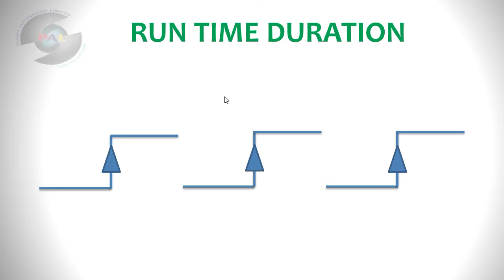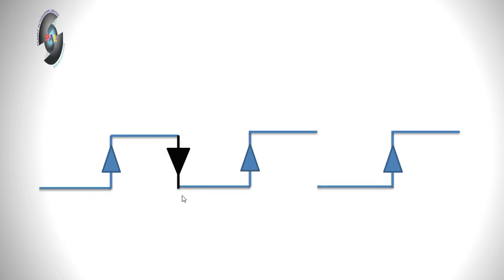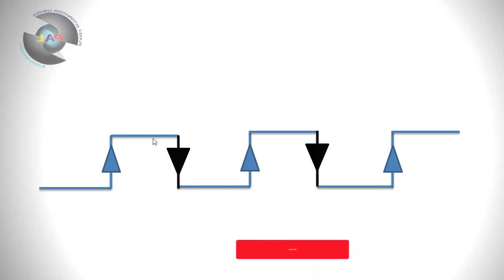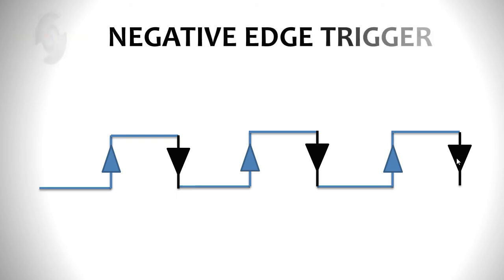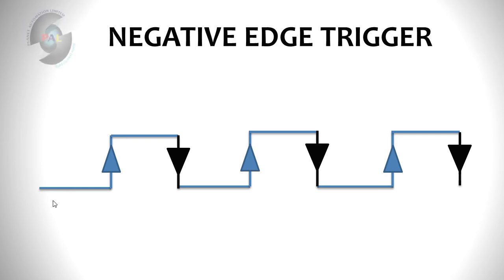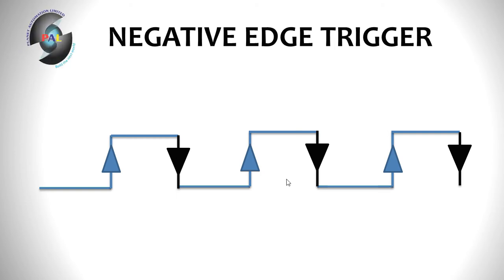For the negative edge trigger: when the signal goes from maximum to minimum — from high to low — that transition is called the negative edge triggering system, also called the falling edge. You can see three falling edge occurrences here in the waveform. So: low to high is the positive edge, and high to low is the negative edge or falling edge triggering system.